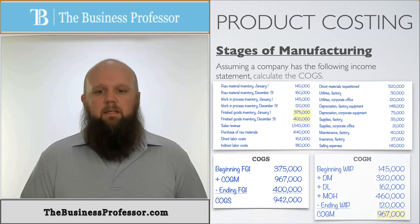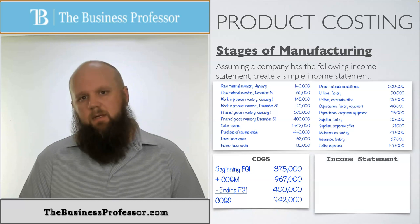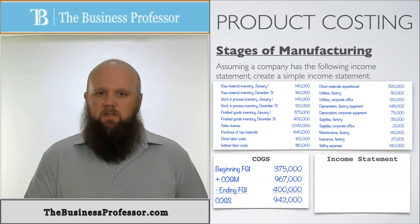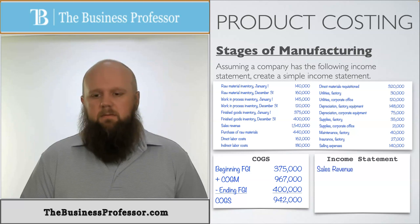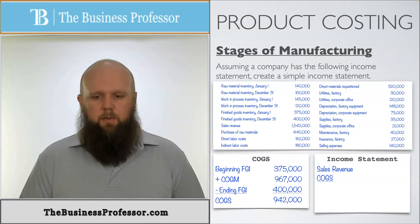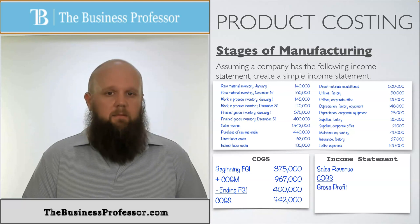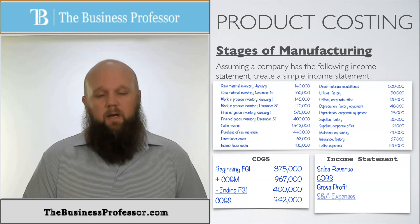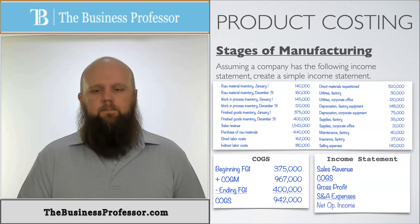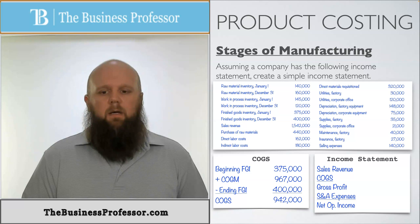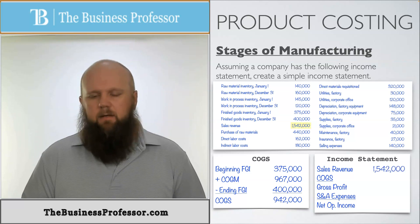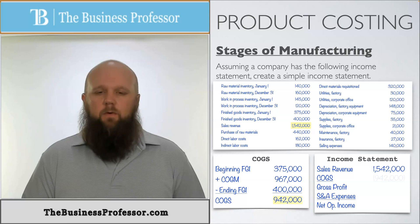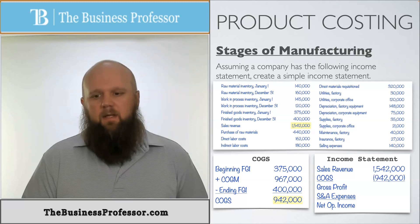The last thing is creating a simple income statement. We start with sales revenue minus cost of goods sold to get gross profit, then minus selling and admin (S&A) expenses to get net operating income. Sales revenue is given as $1,542,000. Cost of goods sold is $942,000, which gives us a gross profit of $162,000 wait — let's put those numbers in.